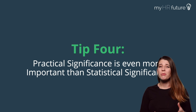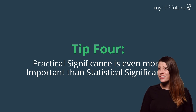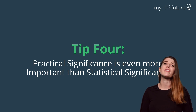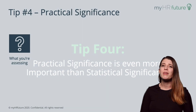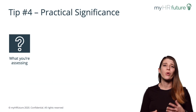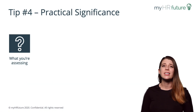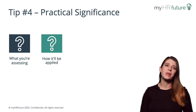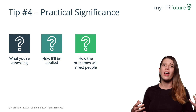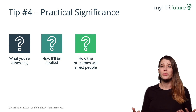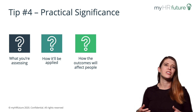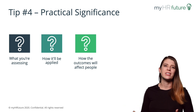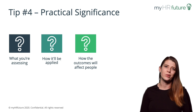Tip number four is that sometimes practical significance is even more important than statistical significance. Sometimes it matters more what you're assessing, how it will be applied, and how the outcomes will affect people than it does just what the number is on some statistical test.